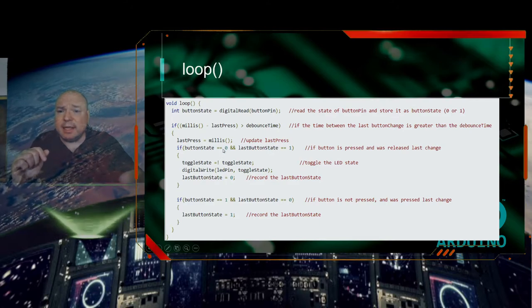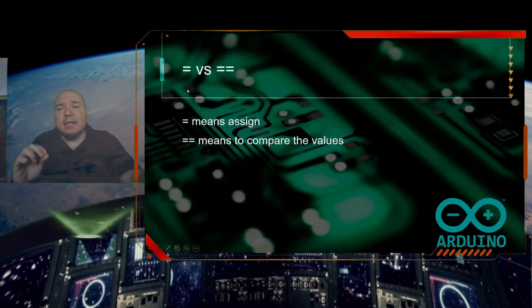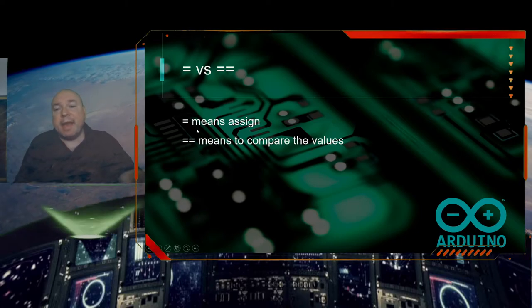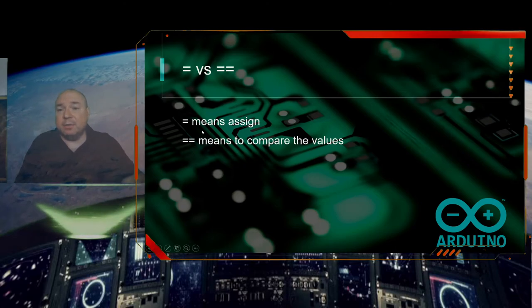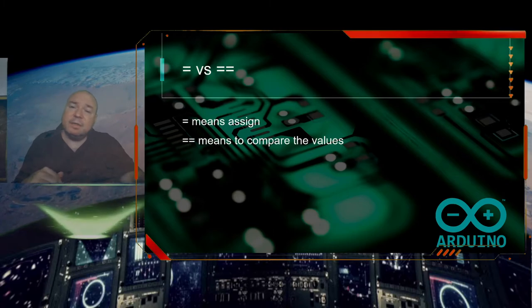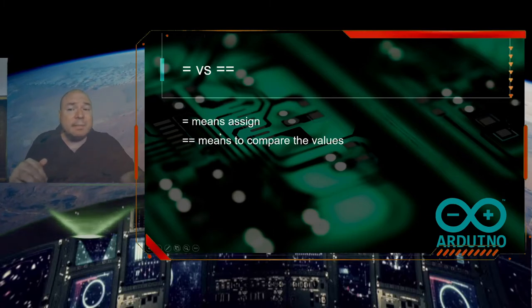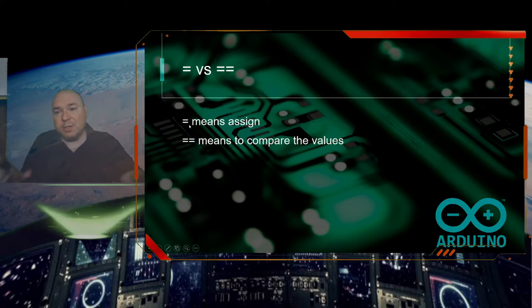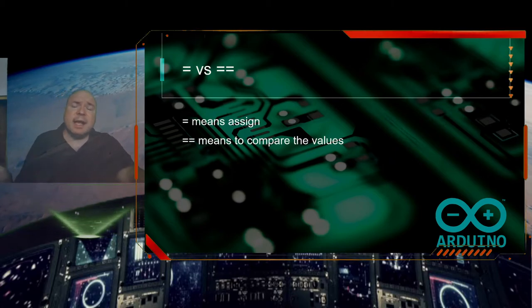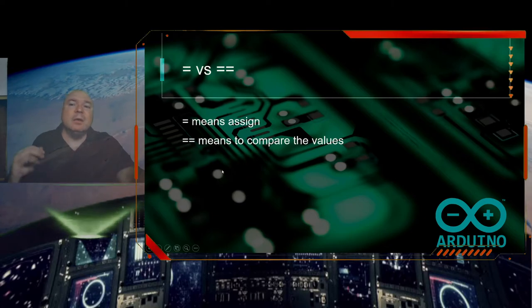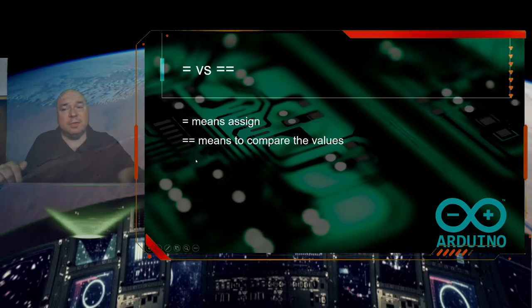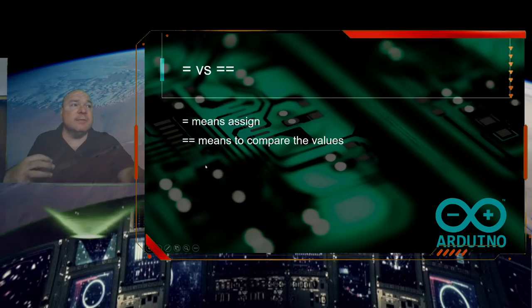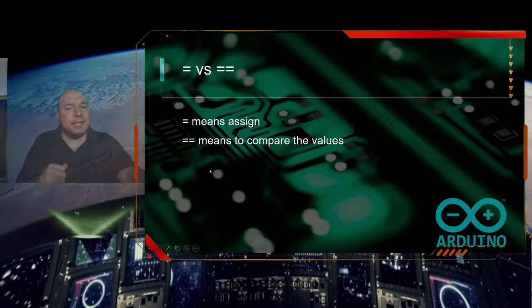The equals-equals symbol: in math we use a single equals sign to both assign and compare values. In computer science those are different things. A single equals sign assigns a value, but to compare two values we use equals-equals. That tells the computer for sure we're comparing, not assigning.